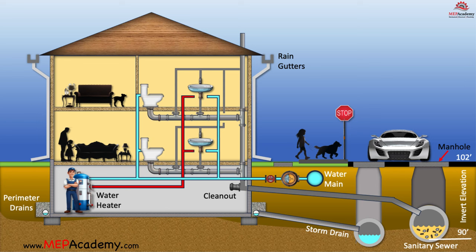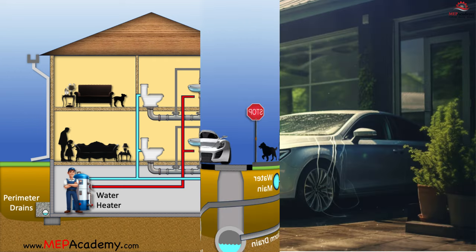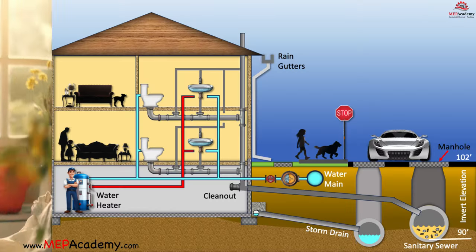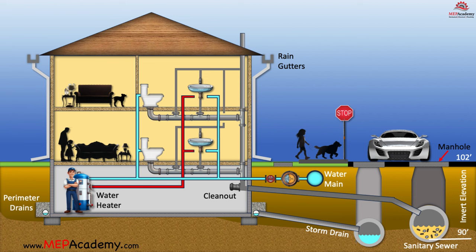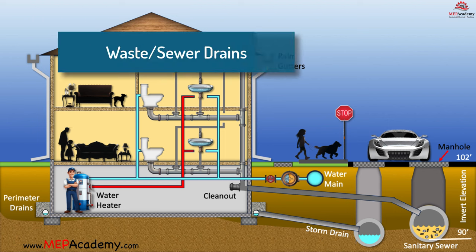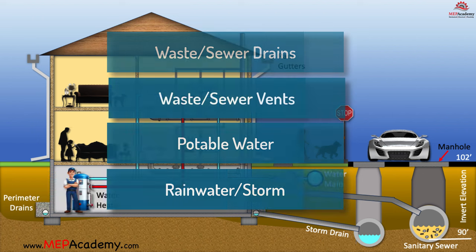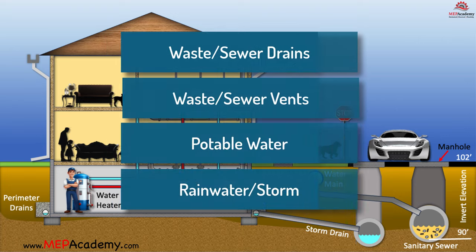In this video, we'll cover the workings of a typical household plumbing system, which is also applicable to some commercial buildings. Practically everything we do relies on plumbing, whether it's washing your car, clothes, or dishes, or brushing your teeth before bedtime. The backbone of these activities is your home's plumbing system, consisting of four key elements: waste drains, waste vents, potable water, and rainwater management. Let's explore each system individually and understand their function.